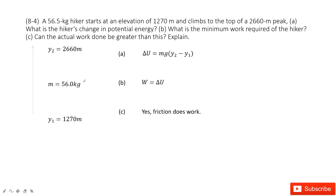We can see we have a hiker. The mass is given, and it moves from y1 to y2, and y1 and y2 are given in the y component. First, calculate the change in potential energy. We use the final potential energy minus the initial potential energy to get the change. The final potential energy is mgy2, and minus initial potential energy mgy1. This gives us the change in potential energy.